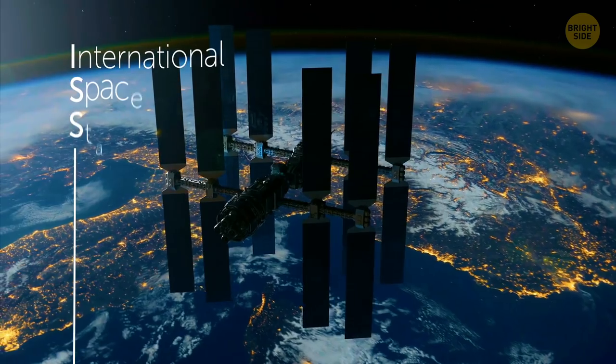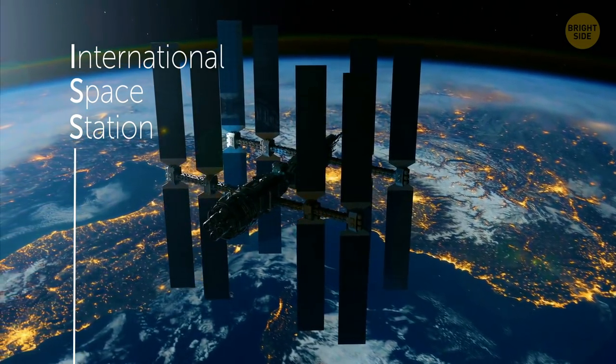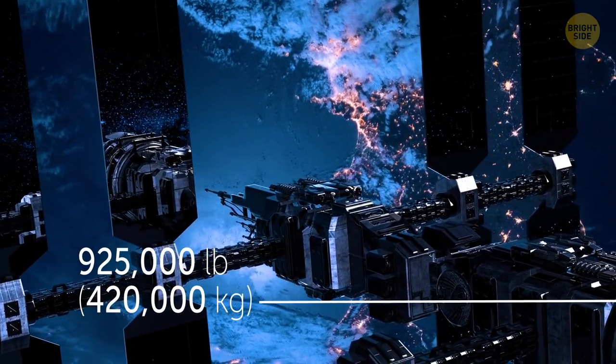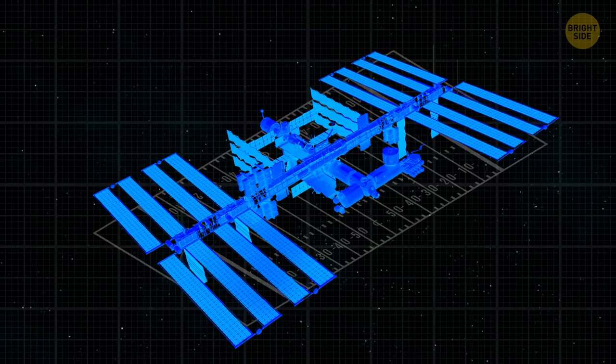The International Space Station is the largest single human-made structure to have entered space. It weighs 925,000 pounds, and it's the size of an American football field.